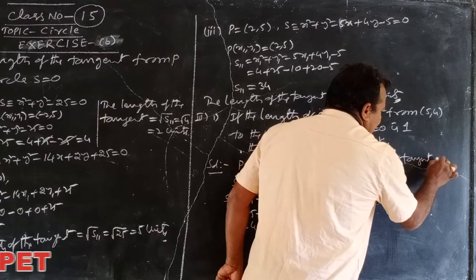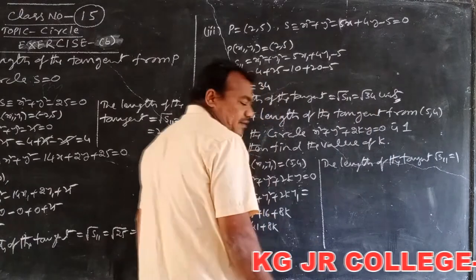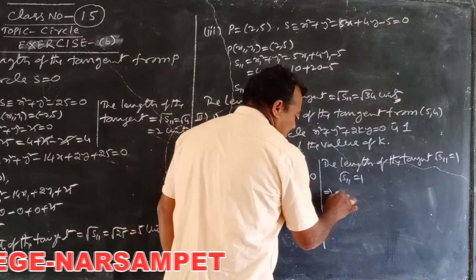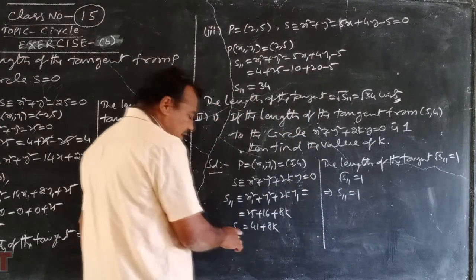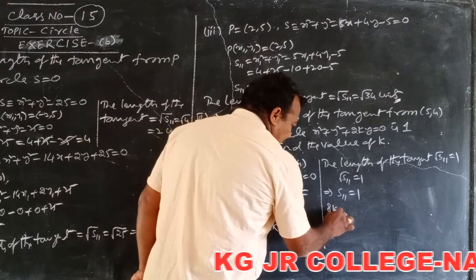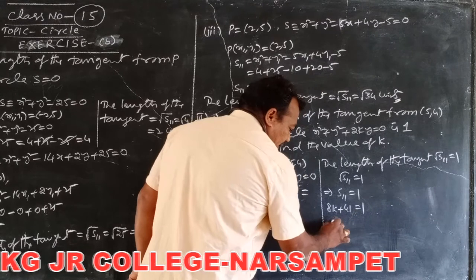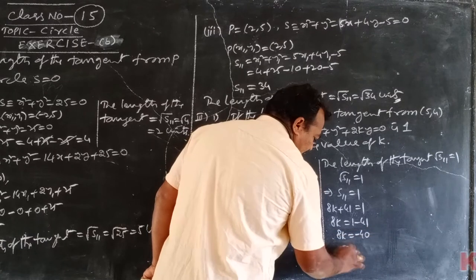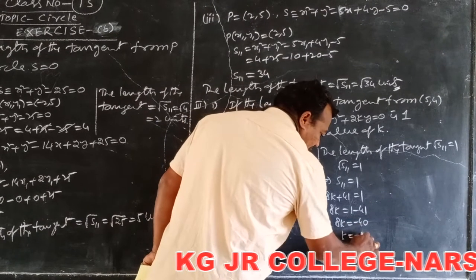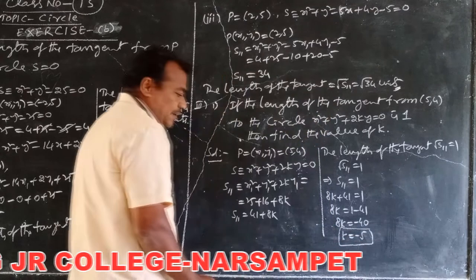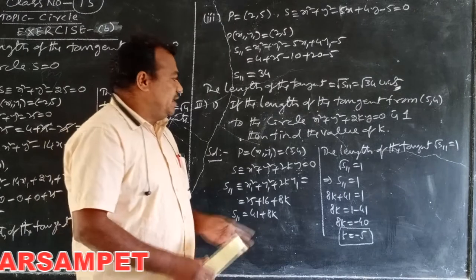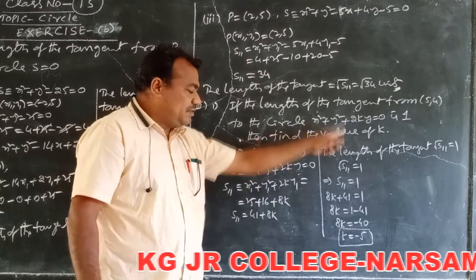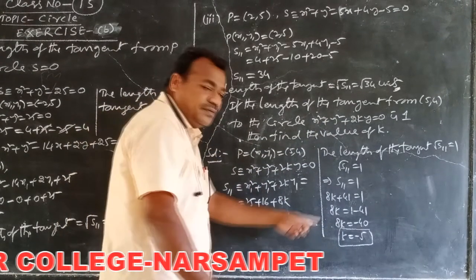Given that the length of the tangent is 1, so root S₁₁ = 1. Squaring both sides: S₁₁ = 1. We already know S₁₁ = 8k + 41. So 8k + 41 = 1, which gives 8k = 1 - 41 = -40, therefore k = -40/8 = -5. So whenever the length of the tangent from (5, 4) to the circle is 1, the value of k is -5.